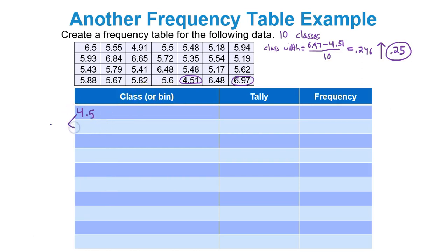Then you add 0.25, and that'll get you to 4.75. Then you add the class width again, plus 0.25, and that'll give you 5. Add the class width again, add 0.25. That'll give you the lower class width of the next class of 5.25. Then I'll just fill in the rest, 5.5, 5.75, 6, 6.25, 6.5, and then 6.75.